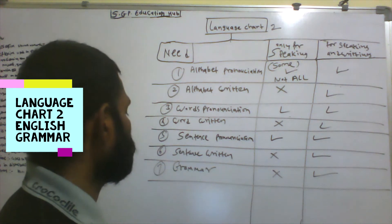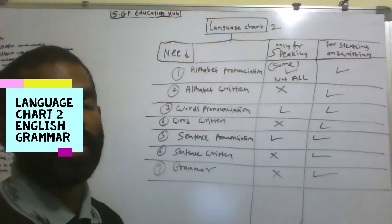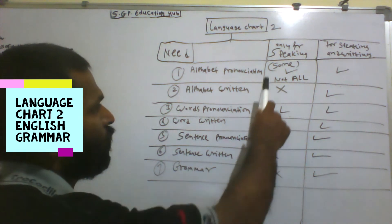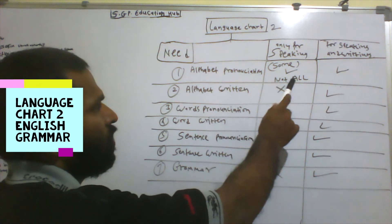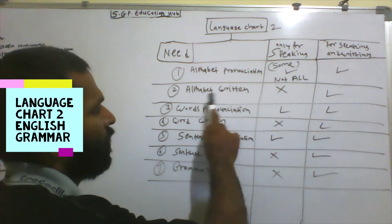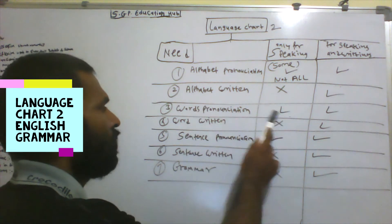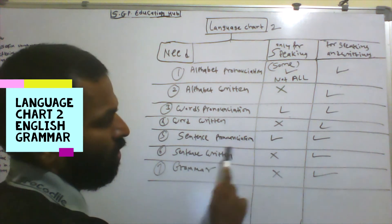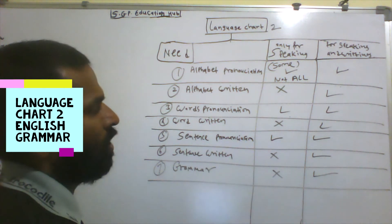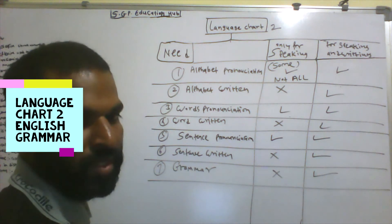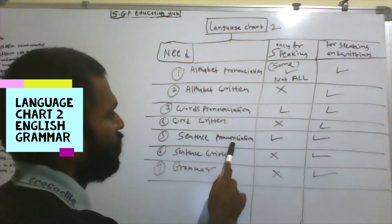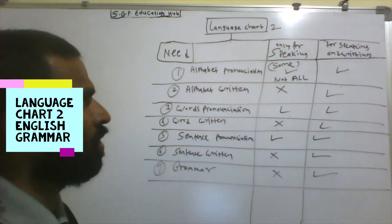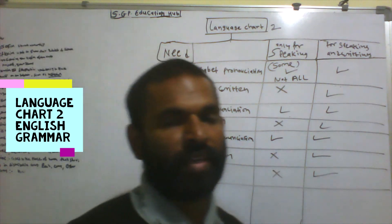So there are seven most important things while you are learning any language. If you want to learn only speaking: alphabetical pronunciation — need some; alphabetical written — no need; word written — no need; sentence pronunciation — need; sentence written — no need; and grammar — no need. Means, if you want to speak any language, you need sentence pronunciation, word pronunciation, and some alphabet pronunciation. For writing, all seven things are needed.